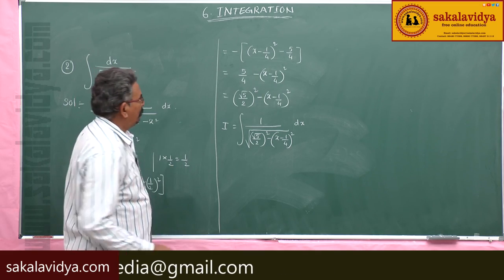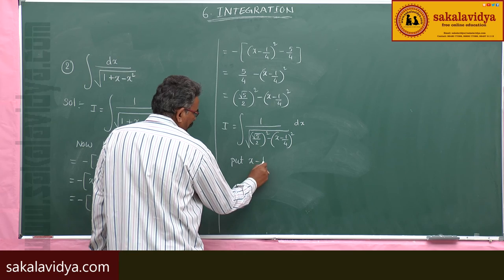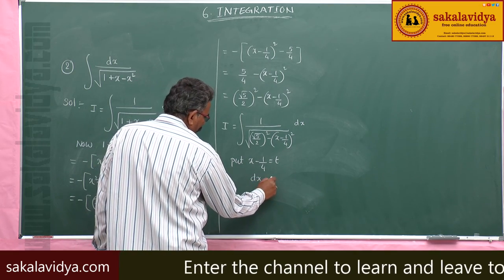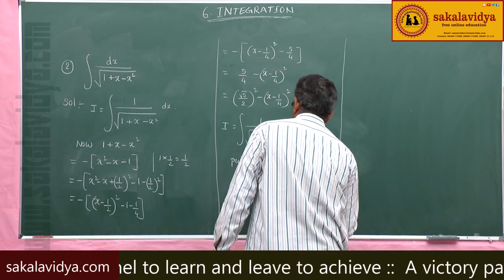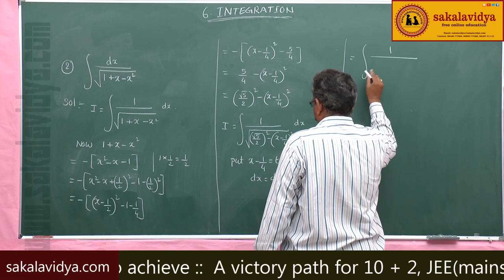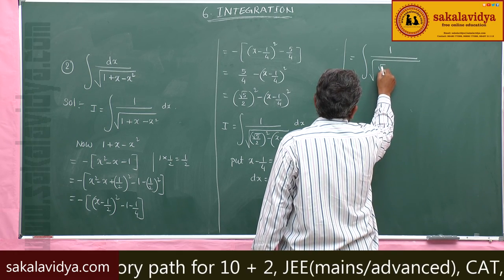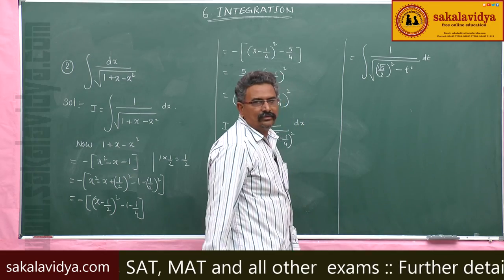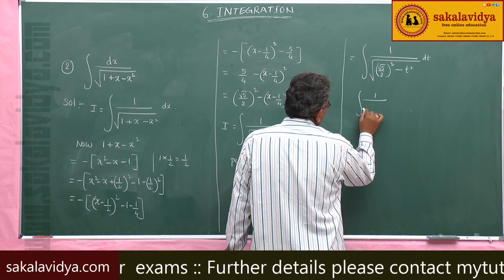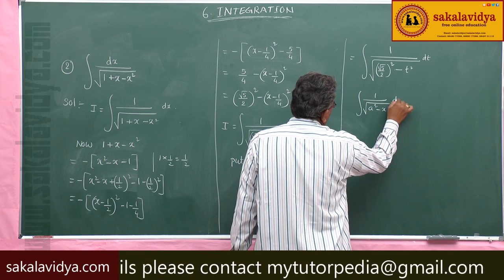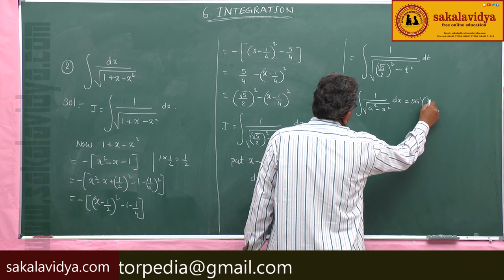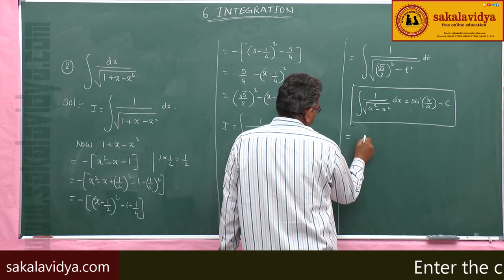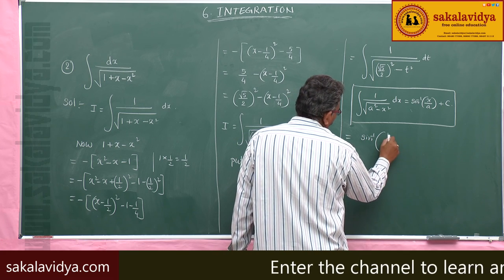Second step in the working rule: put x minus 1/4 equal to t, differentiate with respect to x, so dx equals dt. This becomes the integral of 1 divided by the square root of (√5/2) squared minus t squared, dt. This uses the formula: integral of 1 divided by the square root of a squared minus x squared dx equals sin⁻¹(x/a) plus constant of integration.